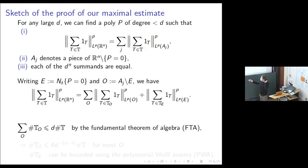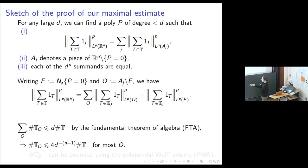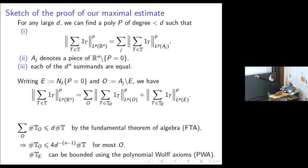This is giving us some kind of orthogonality. But what's the point of cutting it up if we can't say this guy is somehow simpler? It's got fewer tubes. Because this total must be true, we know the majority of these guys must satisfy this inequality — if most of them were bigger, you could multiply by D^N and break this inequality. So we know most of these guys have a much smaller number of tubes to deal with. A delta neighborhood of an algebraic variety is a semi-algebraic set, so we deal with the wall term using the polynomial Wolf axioms.